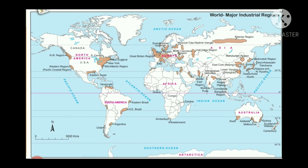In every continent, the areas where industries are located and developed are directly contributing to the development of the country. In this map, you can see the brown color areas in each continent — these are the industrial areas. We will now see the details of the areas which have emerged as industrial regions, the factors affecting those regions, and the types of industries located in those areas.